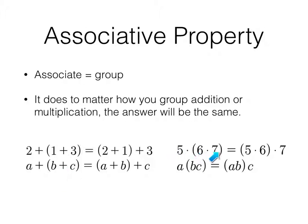So A plus the quantity B plus C is equal to the quantity A plus B plus C. There's that use of the quantity again. 5 times the product of 6 and 7 is equal to the product of 5 and 6 times 7. Notice again, the order is not changing here. 5, 6, 7. 5, 6, 7. A, B, C, A, B, C. Just the grouping.